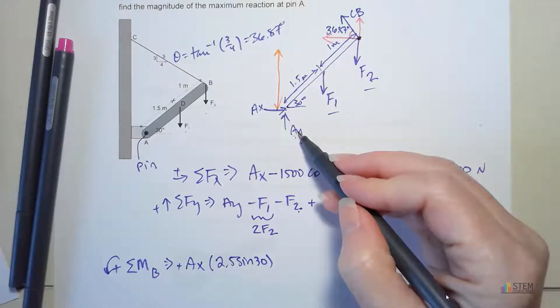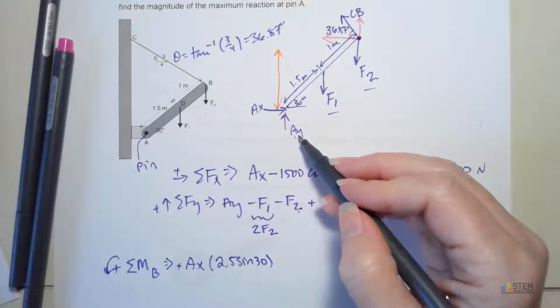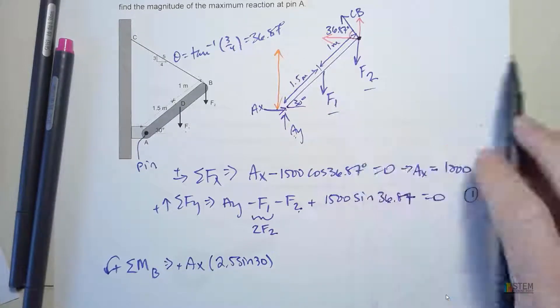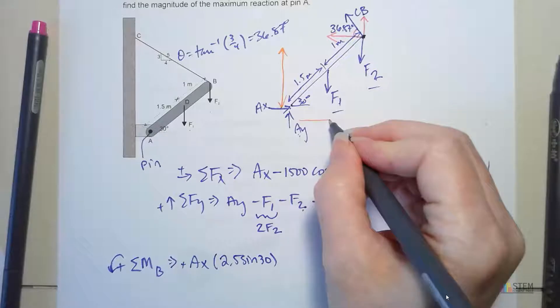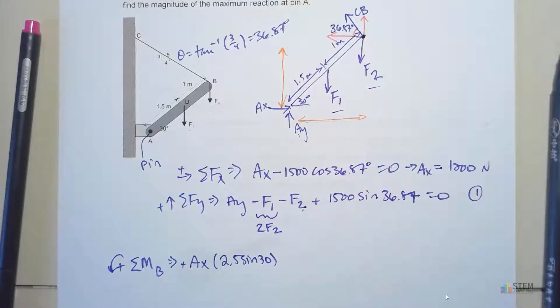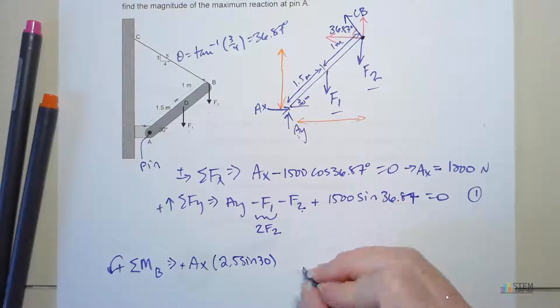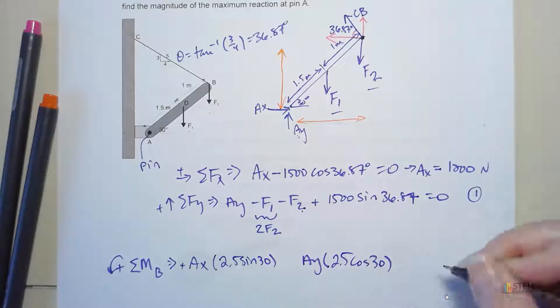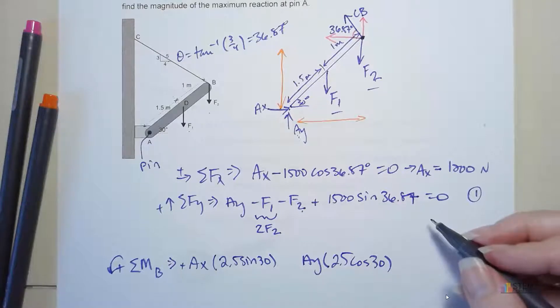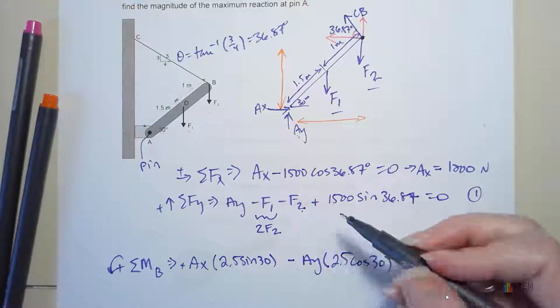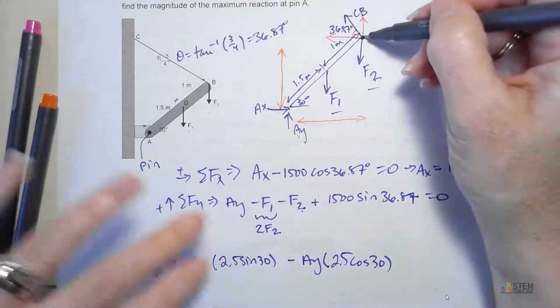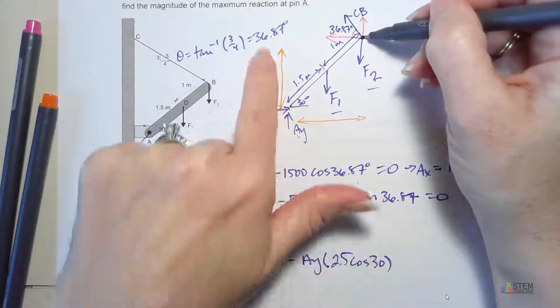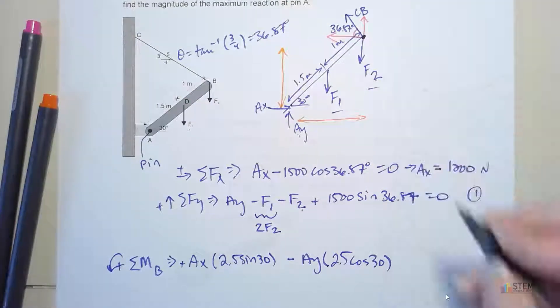Now let's look at Ay. That has a moment also because it's a distance away from point B. The distance I need for that is this. What's that distance? That distance is going to be 2.5 cosine 30. Now we have that distance. Is that positive or negative? What do you think? It's going to be negative. Because again, if you hold on to this, then imagine how it would rotate with this force acting on it. That would rotate that middle bar that way, which is clockwise.